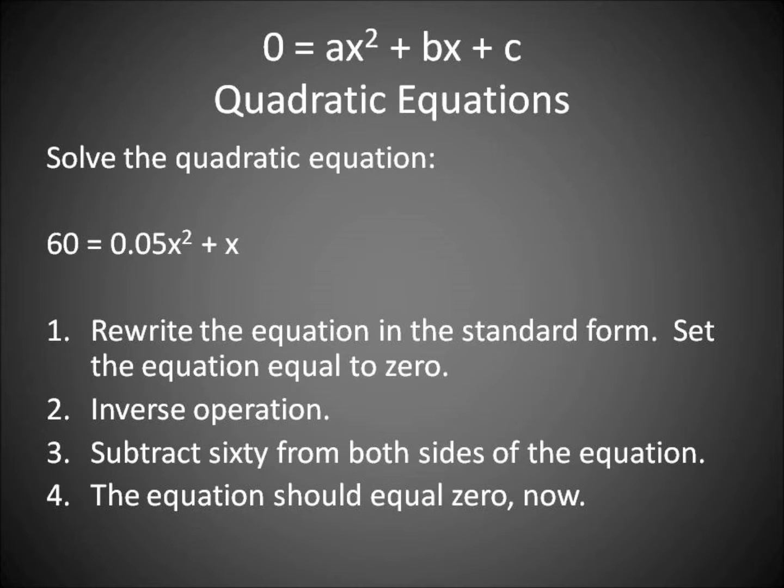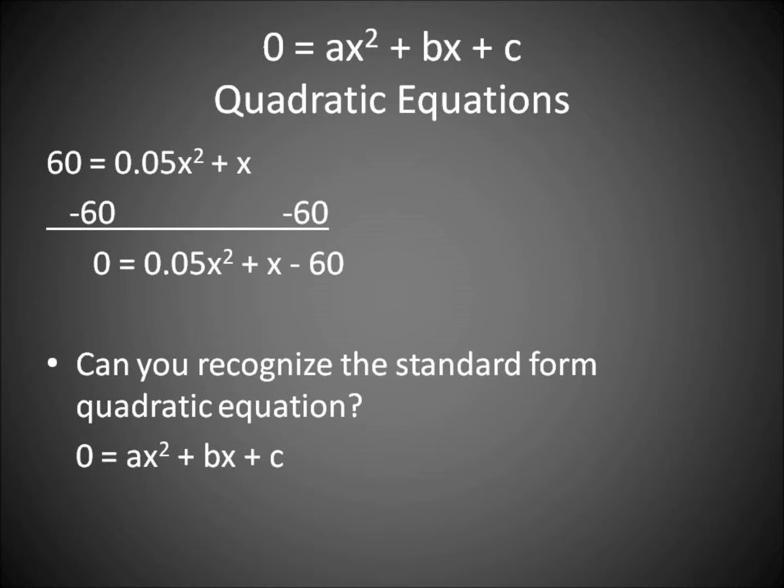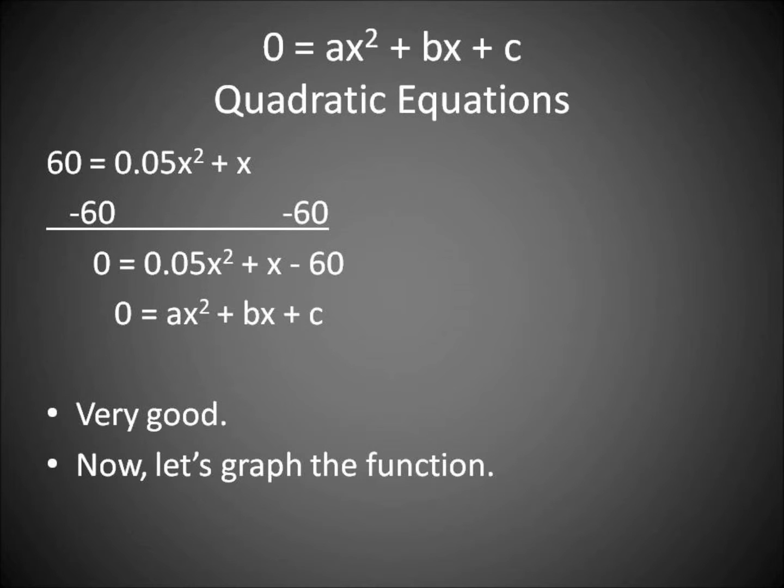Let's solve this equation. First, rewrite the equation in standard form. Set the equation equal to zero and use the inverse operation. We're going to subtract 60 from both sides of the equation. 60 minus 60 equals zero. Bring down 0.05x squared plus x and then bring down negative 60. Can you recognize the standard form? Zero equals ax squared plus bx plus c. Very good.